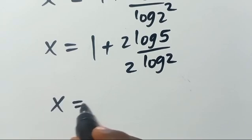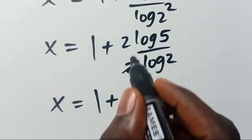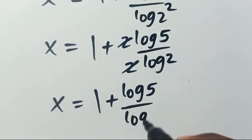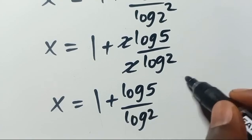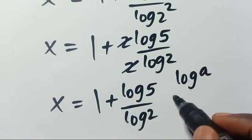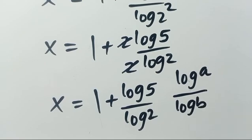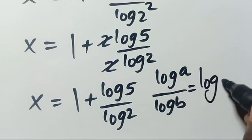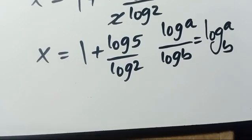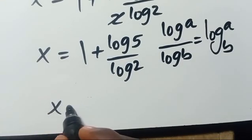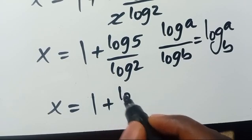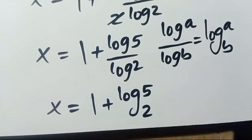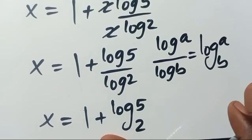The 2s cancel out, leaving log 5 divided by log 2. Recall that when we have log A divided by log B, this equals log A in base B. So therefore x equals 1 plus log 5 in base 2. This is the value of x.